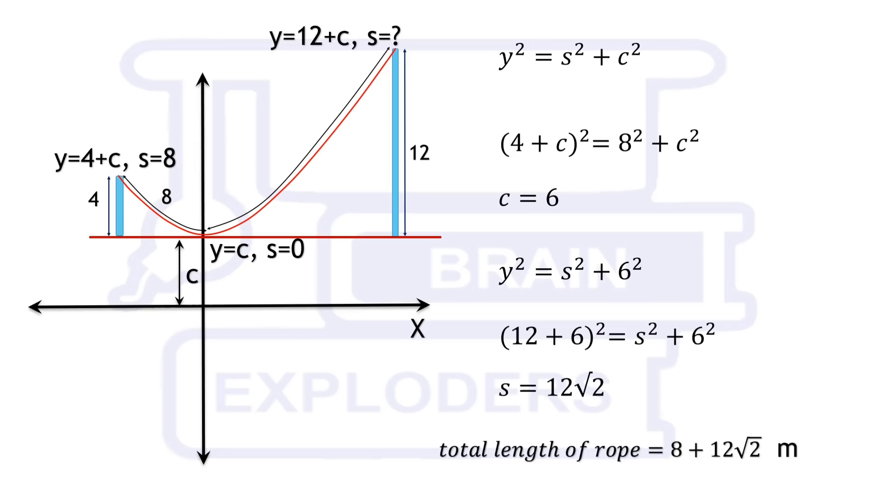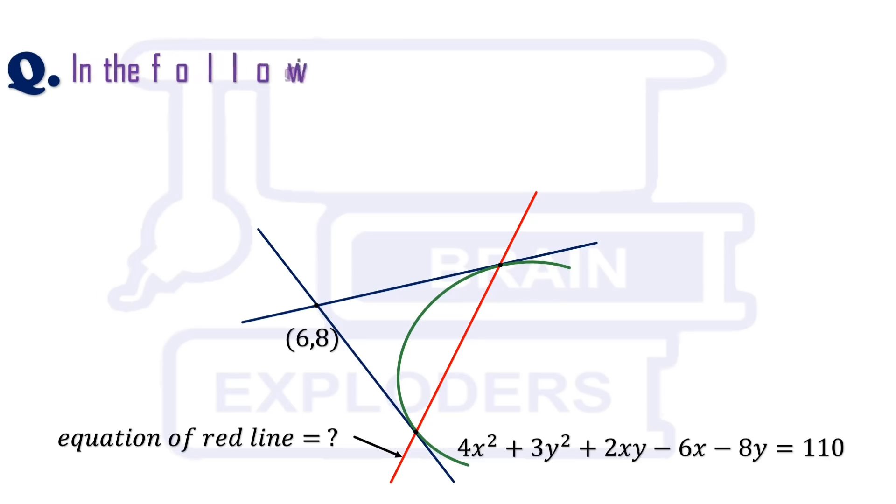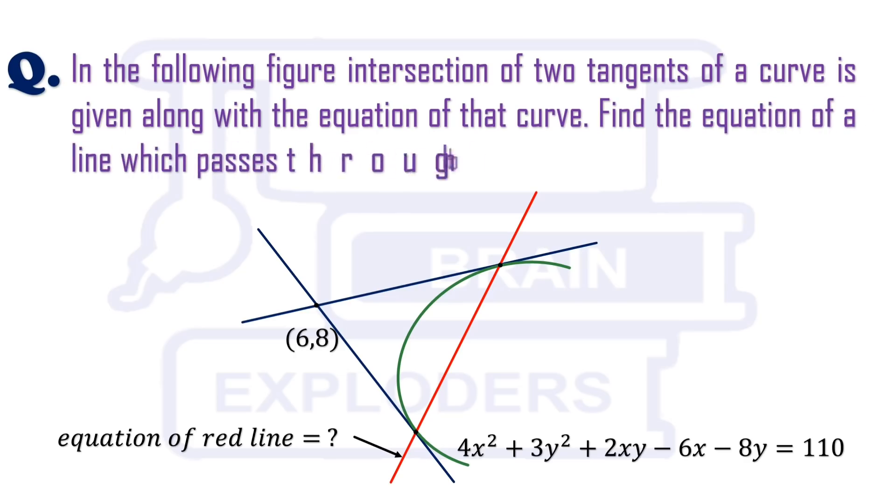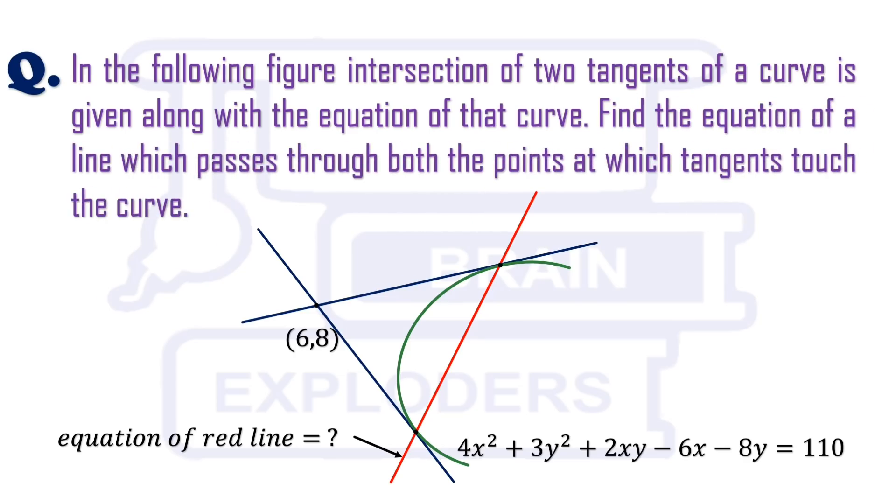Let's move to our another question. In the following figure intersection of two tangents of a curve is given along with the equation of that curve. Find the equation of a line which passes through both the points at which tangents touch the curve.